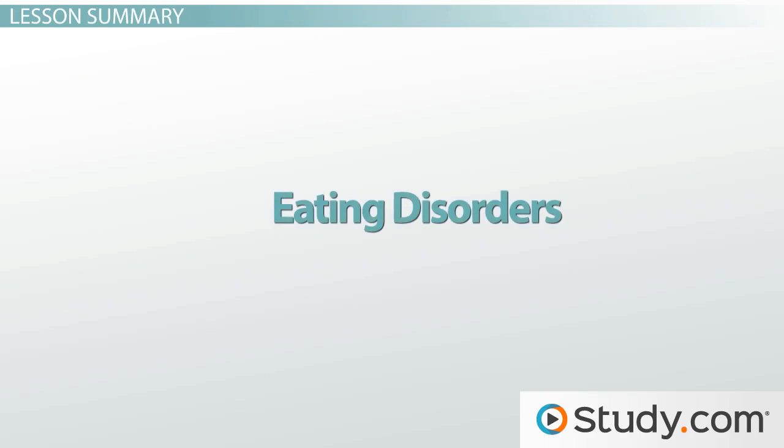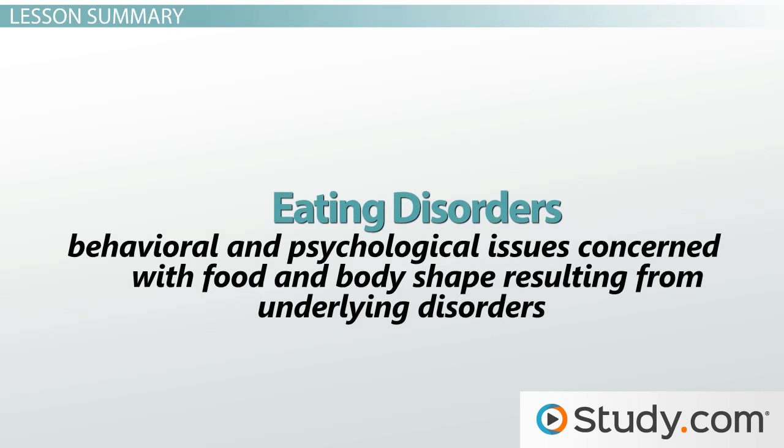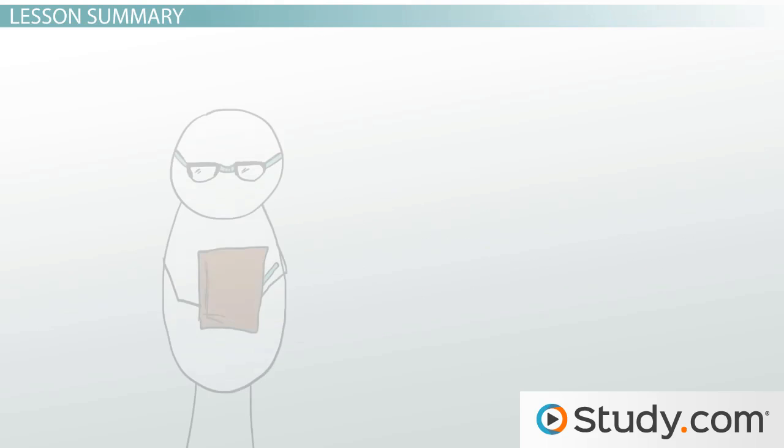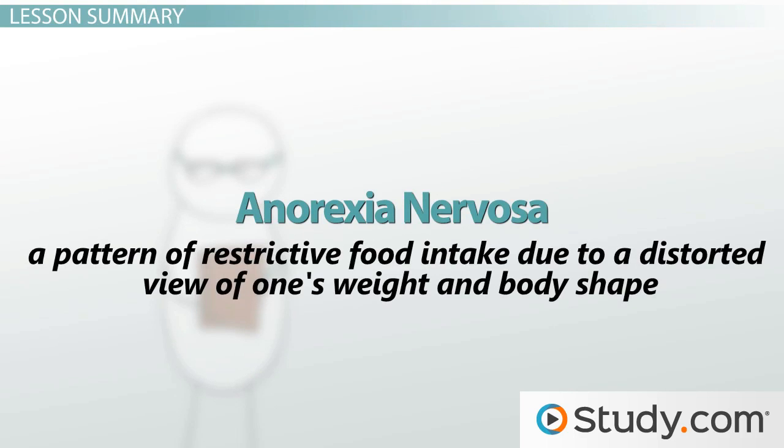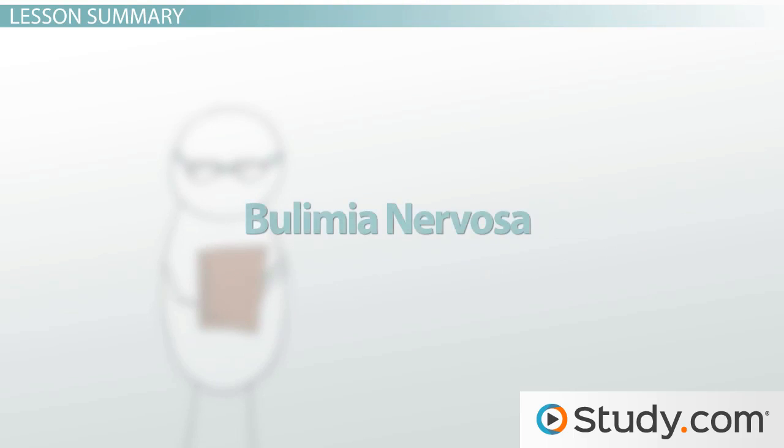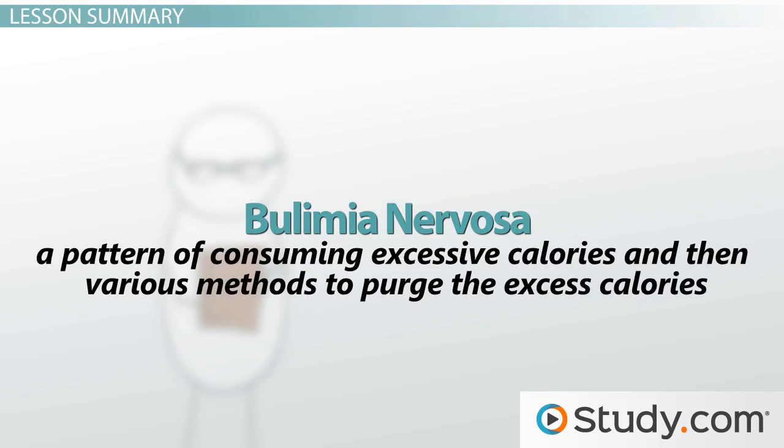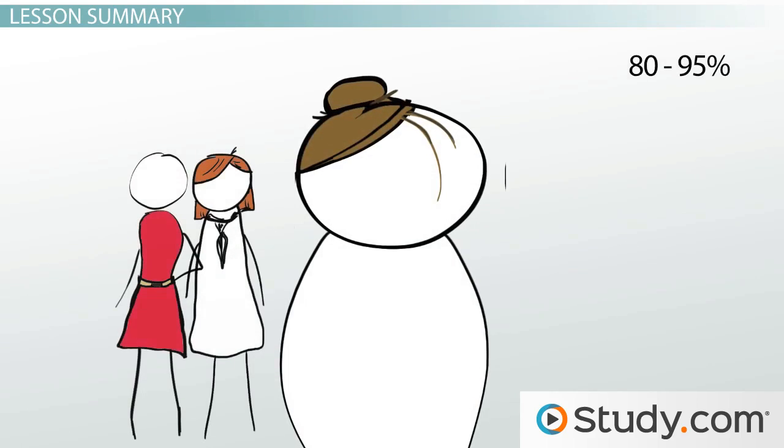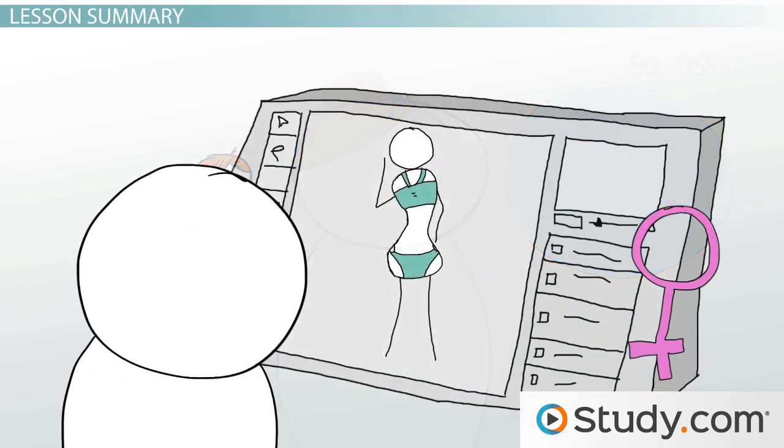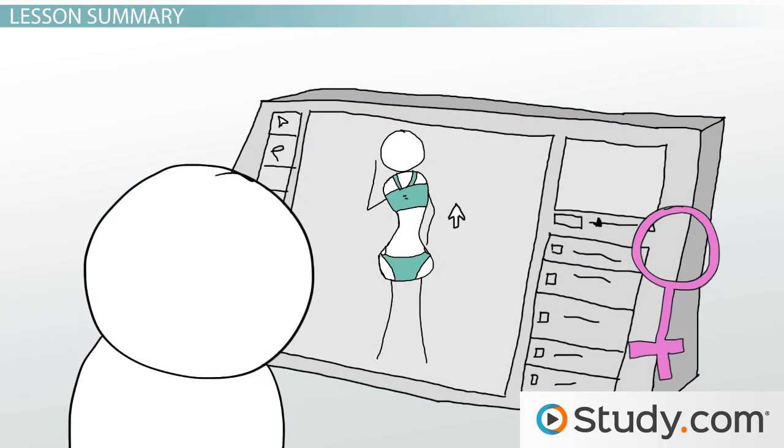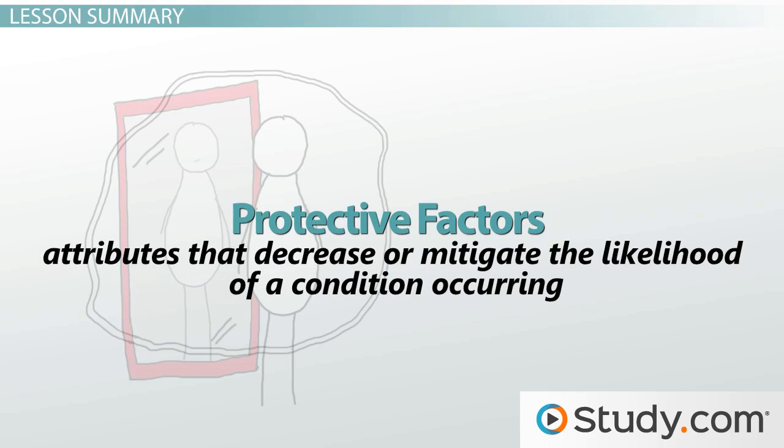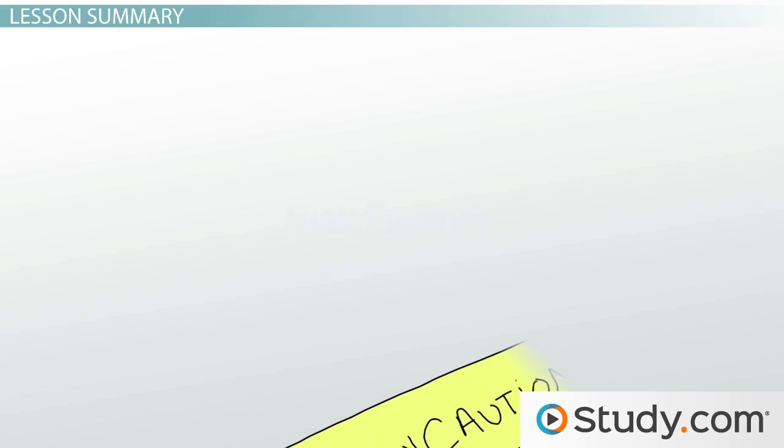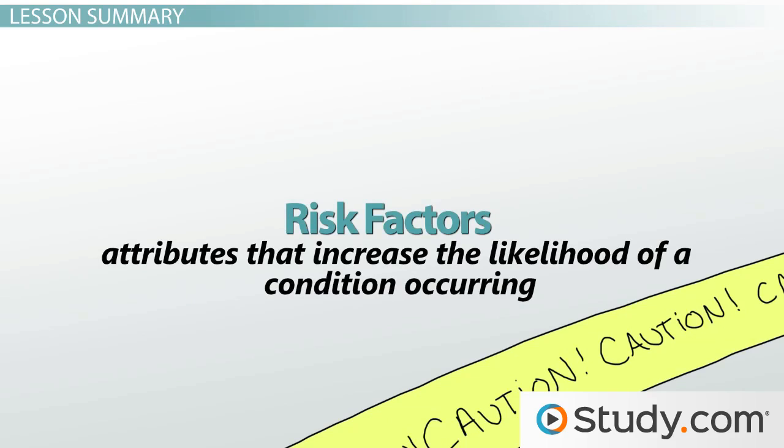Eating disorders are defined as behavioral and psychological food and body shape issues resulting from an underlying disorder. They fall into two broad categories. Anorexia nervosa, which is defined as a pattern of restrictive food intake due to a distorted view of one's weight and body shape, and bulimia nervosa, which is defined as a pattern of consuming excessive calories and then various methods to purge the excess calories. About 80 to 95% of people diagnosed with an eating disorder are women, which is likely due to a cultural push for an impossible ideal. To mitigate the influence of culture are protective factors, which are attributes that decrease or mitigate the likelihood of a condition occurring. But there are also risk factors, which are attributes that increase the likelihood of a condition occurring.